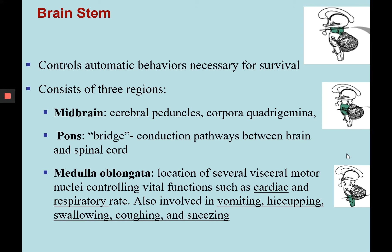Next, we're going to look at the brainstem. The brainstem controls automatic behaviors necessary for survival. Make sure you remember there are three parts to the brainstem: the midbrain, pons, and medulla oblongata.